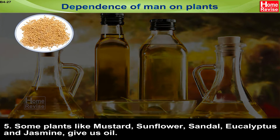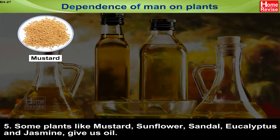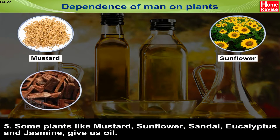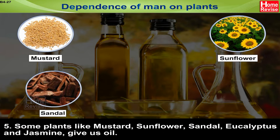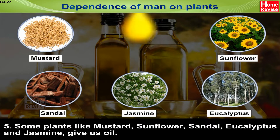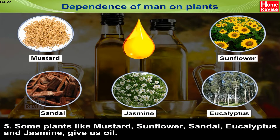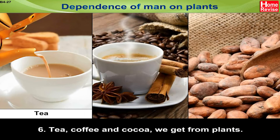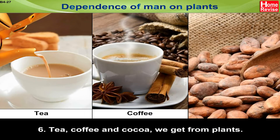Some Plants like Mustard, Sunflower, Sandal, Eucalyptus and Jasmine give us Oil. Tea, Coffee and Cocoa we get from Plants.